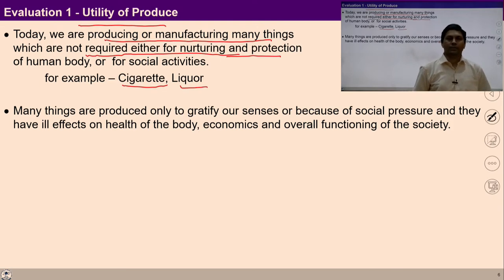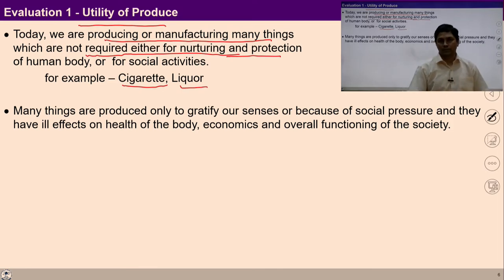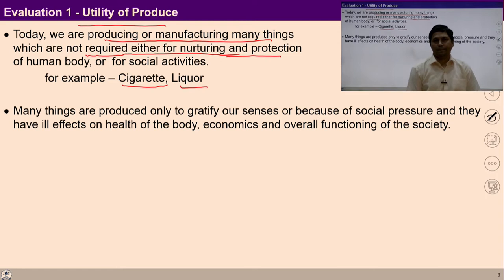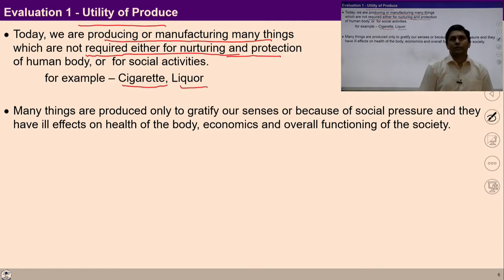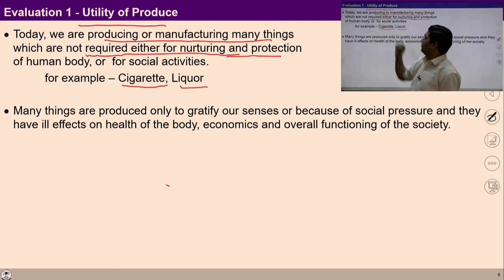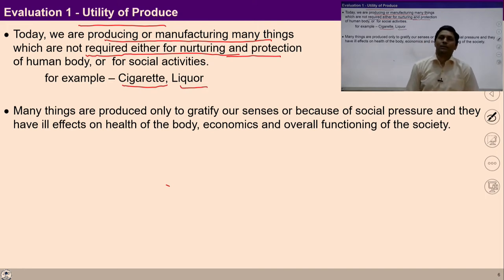You can take a pause, make a list of production processes, make a list of physical facilities which are being produced in the system, then evaluate them on the basis of utility of produce. If they are not nurturing the body, if these physical facilities are not protecting the body, then we must ask: is it required to produce them? The first criteria to evaluate production is the utility of the produced item.